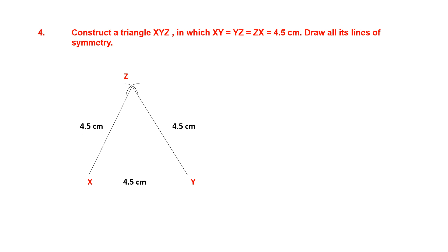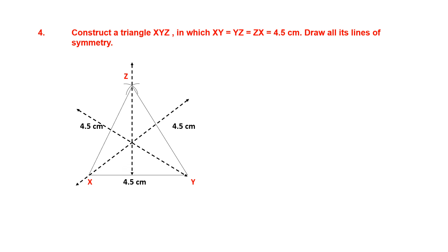Now that the construction is complete, draw the lines of symmetry. We have a vertical line of symmetry, one diagonal, and one more. This is an equilateral triangle with all three sides equal, so we can draw three lines of symmetry.